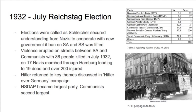In 1932, elections were called as Schleicher secured an understanding from the Nazis to cooperate with the new government if the ban on the SA and SS were lifted. Violence erupted on the streets between the SA and the Communists with 86 people killed, and chaotic scenes in Hamburg where 17 Nazis marched through, leading to 19 dead and over 20 injured. Hitler returned to key themes from the 'Hitler over Germany' campaign. The Nazis became the largest party with the Communists becoming the second largest — one party on the far right and one on the far left.